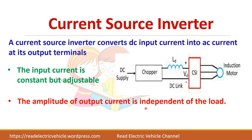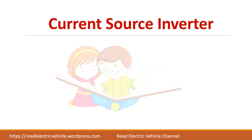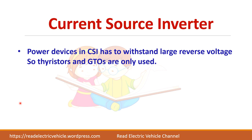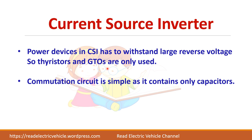The amplitude of the output current is independent of the load. In a voltage source inverter, the output voltage is independent of the load and we always get a square wave. Similarly, in a current source inverter the amplitude of the output current is independent of the load. The power devices in a current source inverter have to withstand large reverse voltage, so normally thyristors and GTOs are used, and simple capacitors can be used for achieving commutation of thyristors.